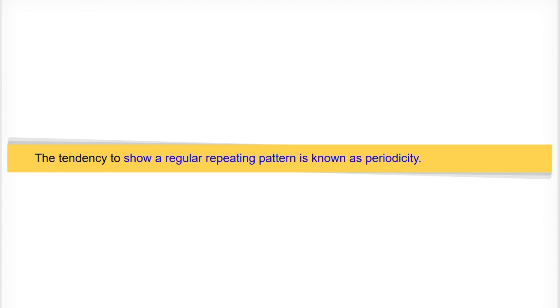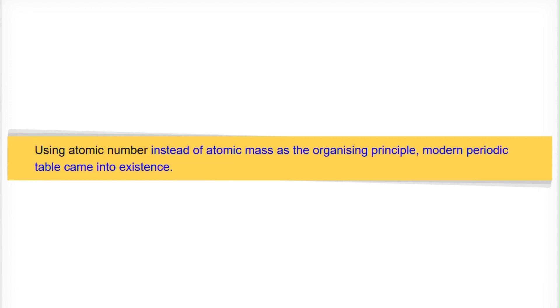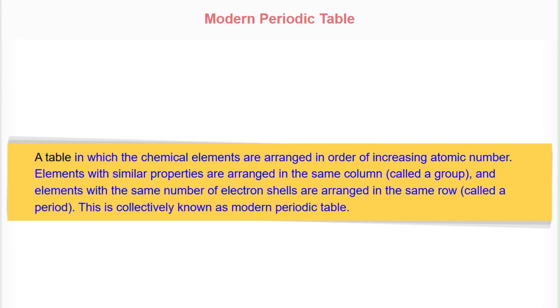The tendency to show a regular repeating pattern is known as periodicity. Using atomic number instead of atomic mass as the organizing principle, the modern periodic table came into existence, a table in which the chemical elements are arranged in order of increasing atomic number.